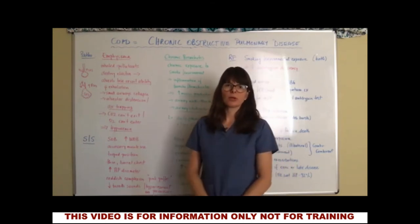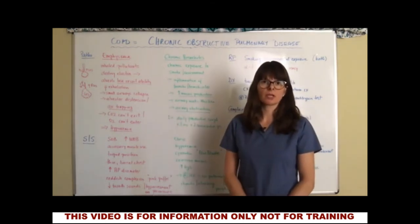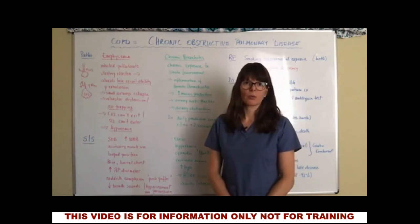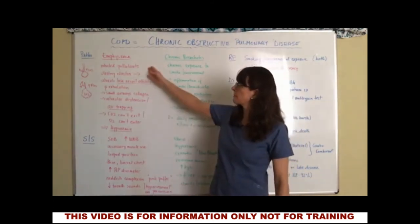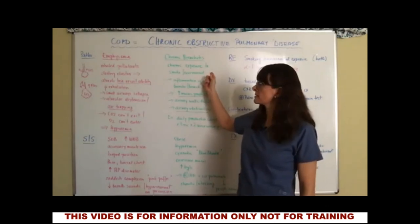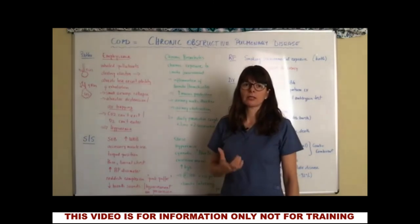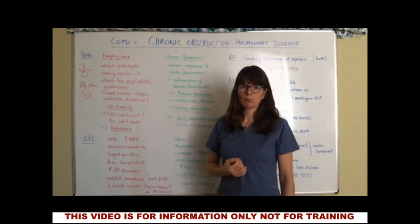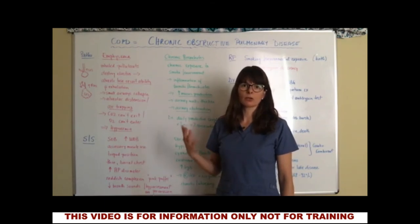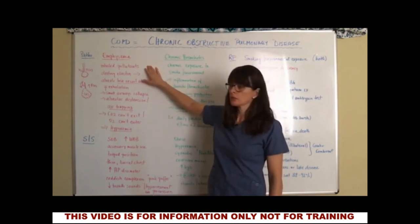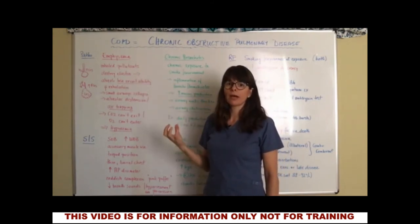With chronic obstructive pulmonary disease, we always have to distinguish between two different pathophysiological mechanisms. One of them is emphysema and the other is chronic bronchitis. Emphysema is caused by inhaled pollutants — most commonly smoke or other environmental pollutants such as living close to factories or agricultural environments.